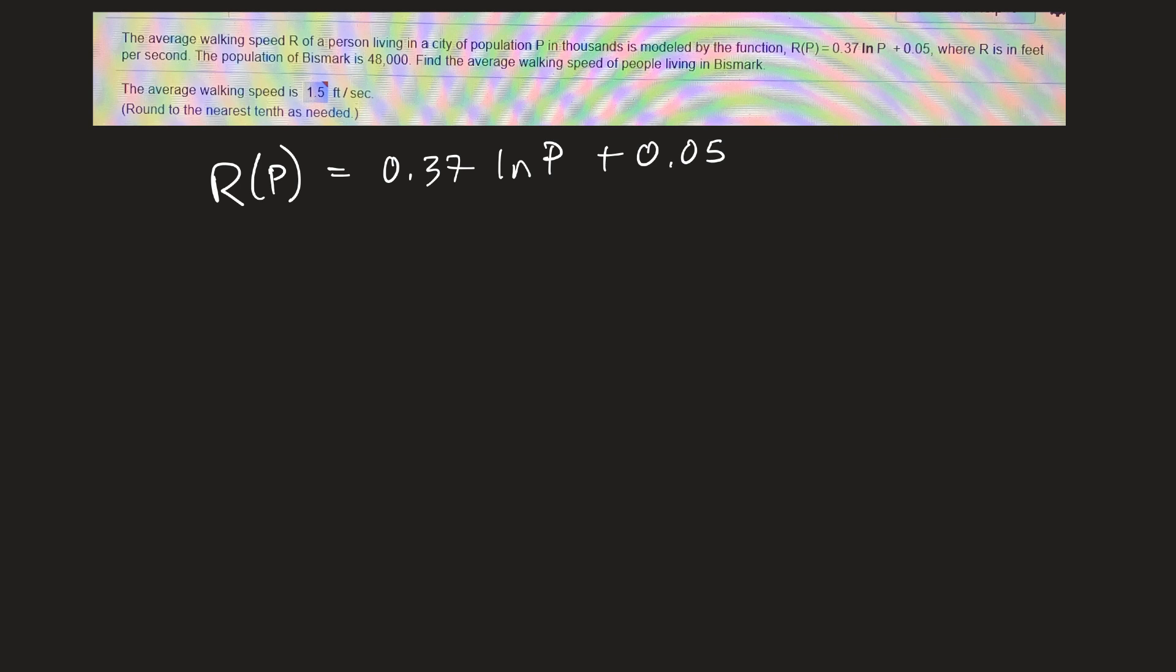So p is population. That's sort of funny, your walking speed varies according to how many people live in the place. Anyway, they want to know the walking speed for a place with a population of 48,000. So 0.37 ln of 48,000 plus 0.05.